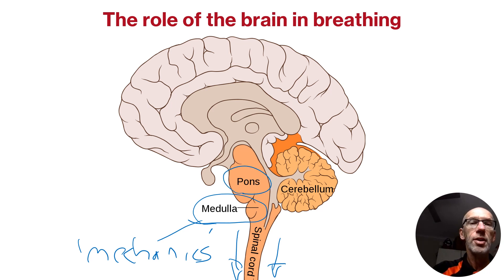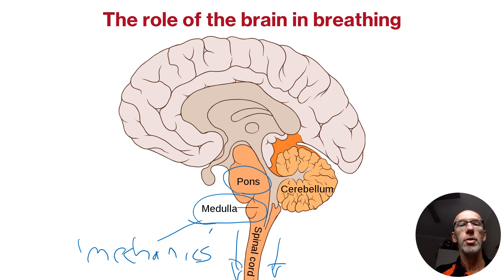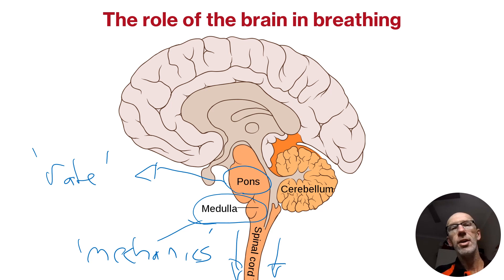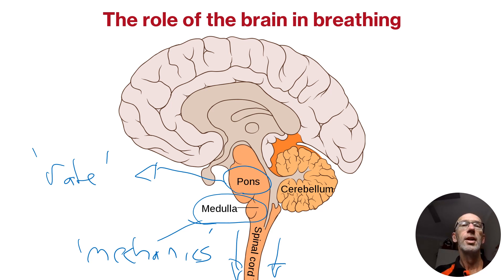The pons, which is also part of the brain stem along with the medulla, plays a key role in the rate of breathing depending on the level of activity that the individual or organism is involved in at the time.